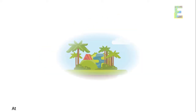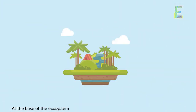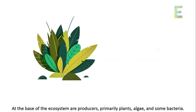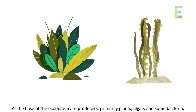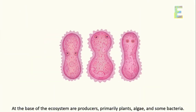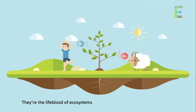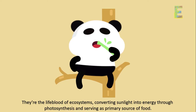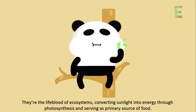Producers — at the base of the ecosystem are primarily plants, algae, and some bacteria. They're the lifeblood of ecosystems, converting sunlight into energy through photosynthesis and serving as the primary source of food.